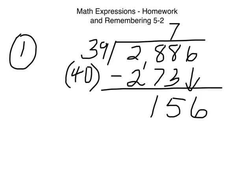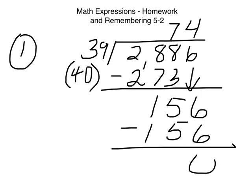39 or 40, we can think of it as 39 or 40. Can that go into 156? Well, yes, it can actually go into it evenly 4 times. And 4 times 39 is 156. And we subtract, and we get 0.